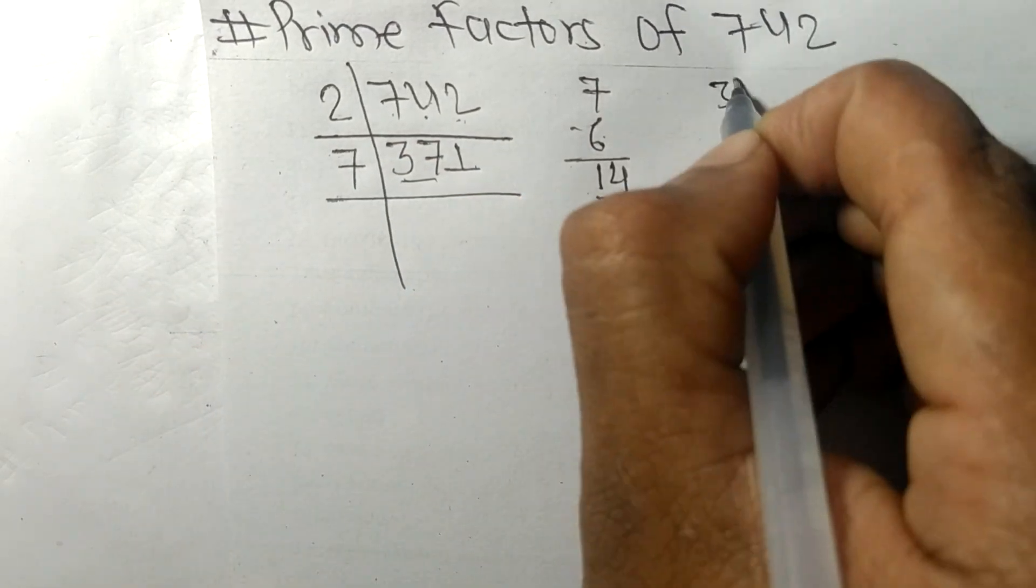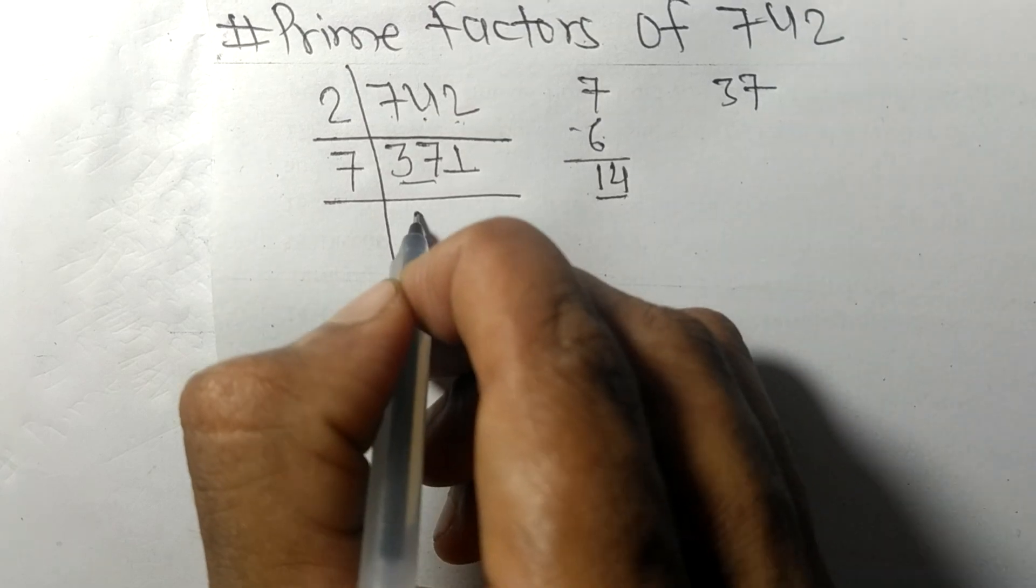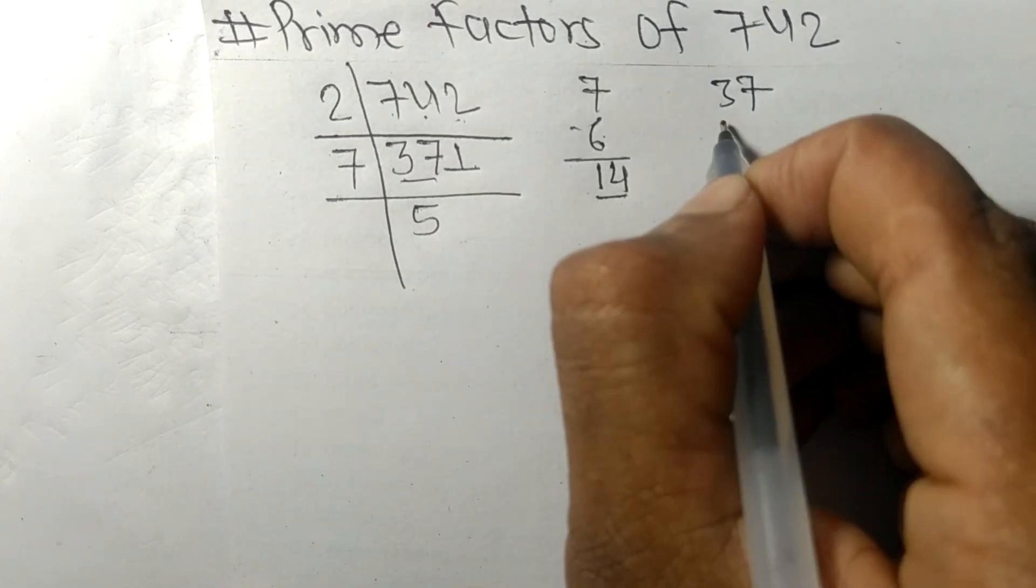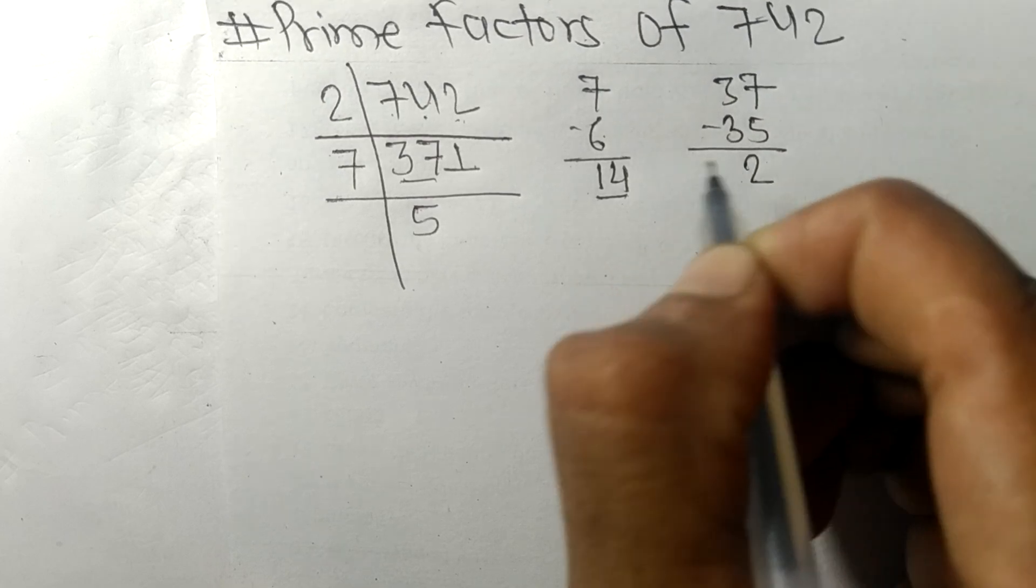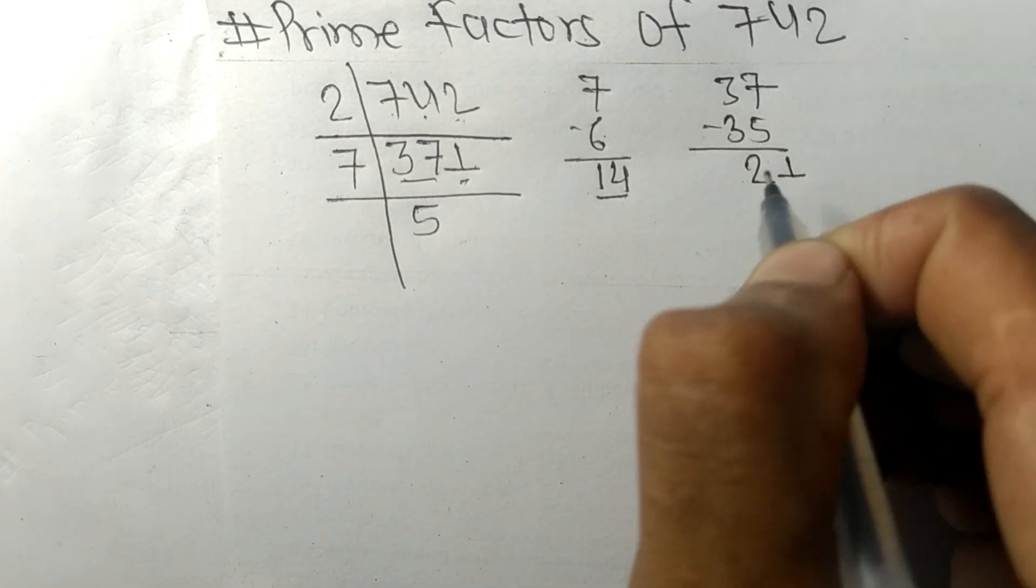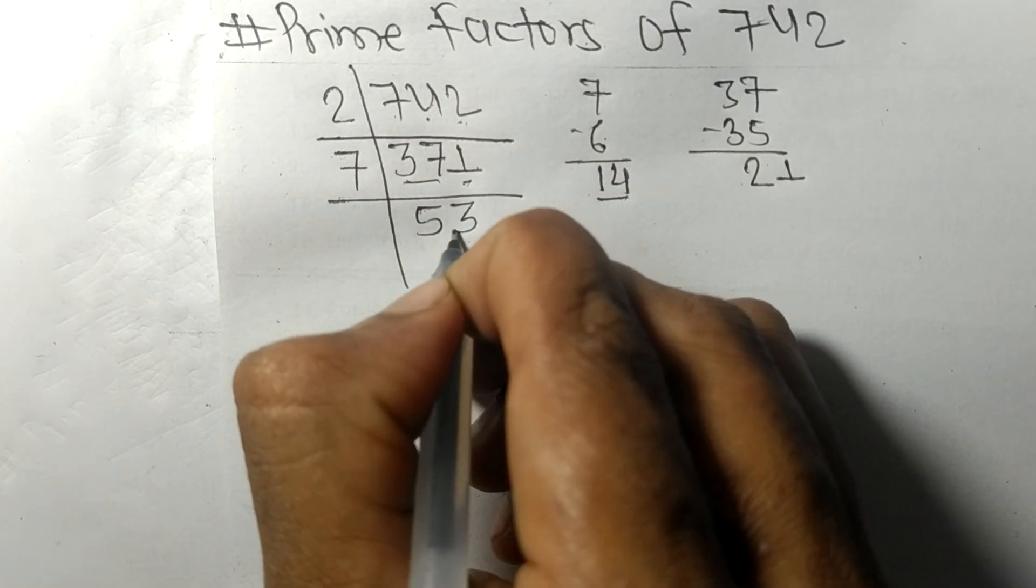First we have 37, so 7 times 5 means 35. We got 2 and this one, 21. 7 times 3 means 21.